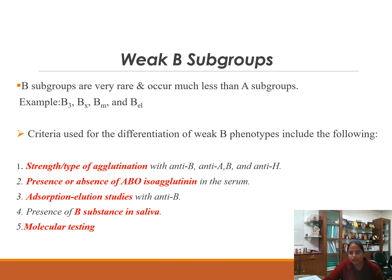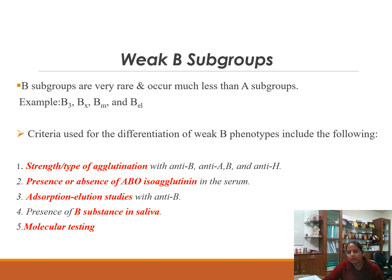B subgroups are very rare and much less frequent than A subgroups. Examples include B3, Bx, Bm, Bl, etc. Criteria for differentiation: strength of agglutination with anti-B, anti-AB, and anti-H antisera; presence or absence of ABO isoagglutinins in serum; absorption-elution studies with anti-B; saliva studies for B substance; and molecular testing.